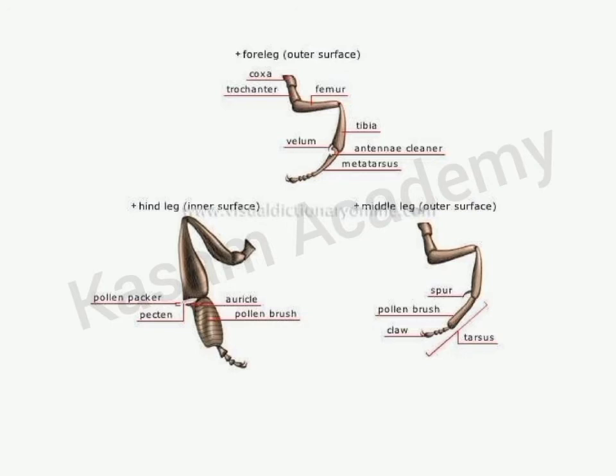The tibial spur loosens pollen pellets from the pollen basket on the hind legs, and also cleans the wings and spiracles. The hind legs or metathoracic legs consist of three important structures: pollen basket or corbicula, pollen packer or pollen press, and pollen comb. The corbicula enables the bee to carry loads of pollen and propolis. The pollen packer consists of pecten — a stout bristle-like structure — and auricle, a small plate fringed with hairs at the basal end.